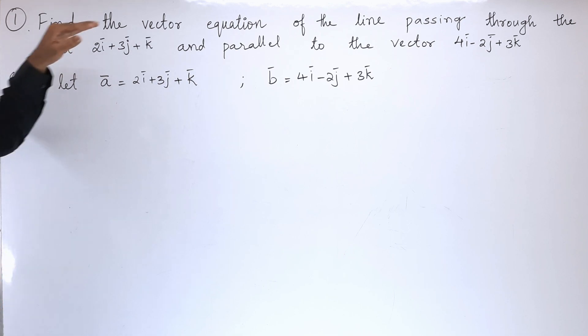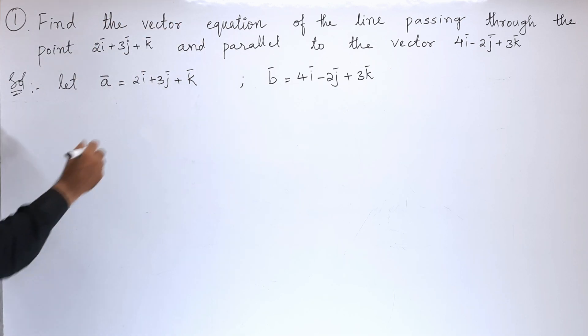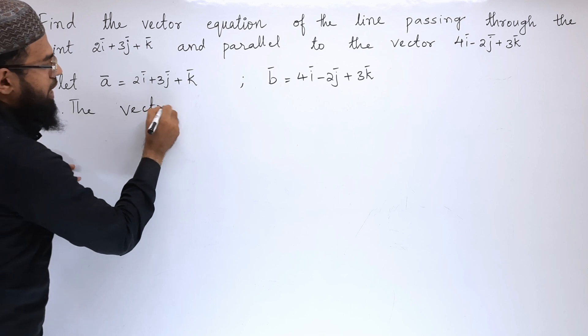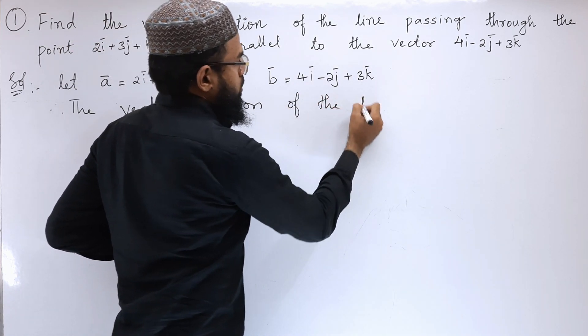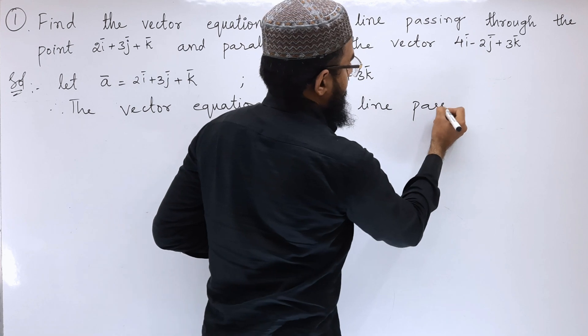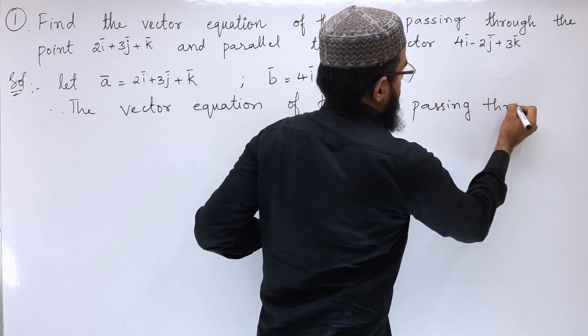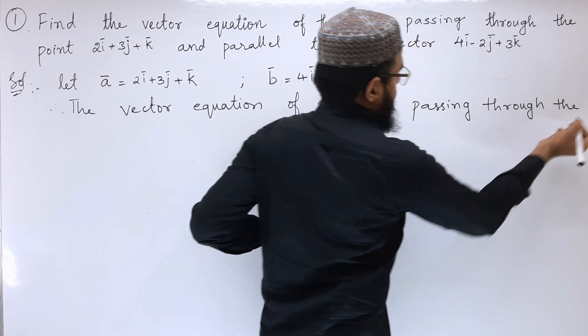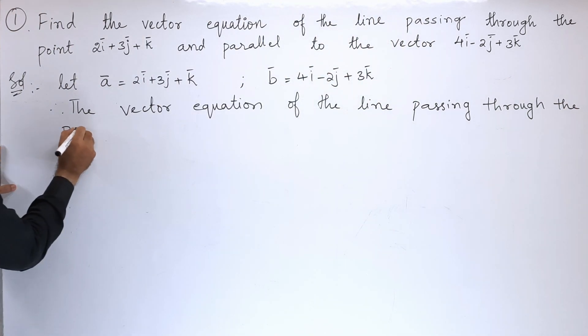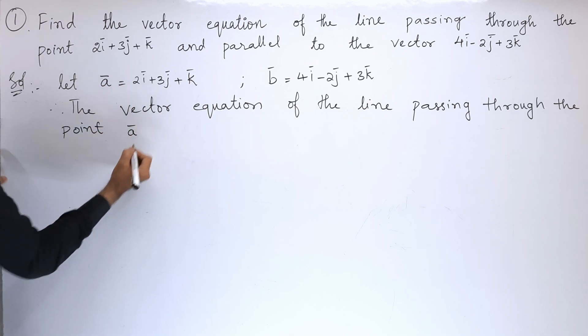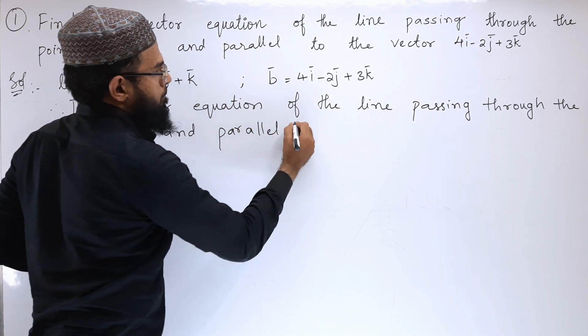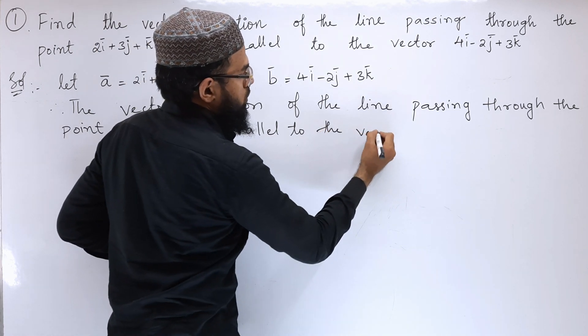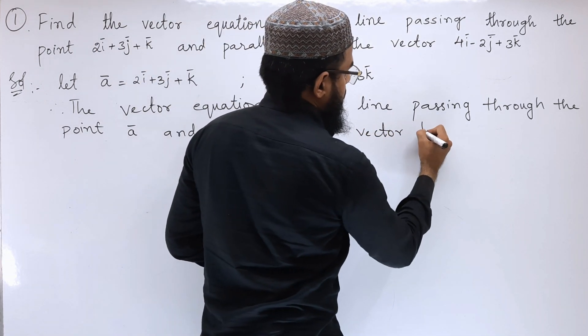Next, they said that to find out the vector equation. So, the line passing through the point - so the point here is vector a - and parallel to the vector b.